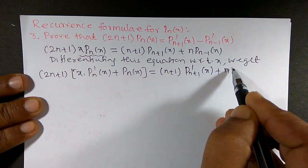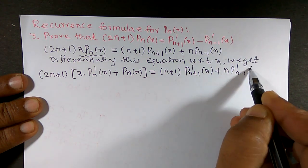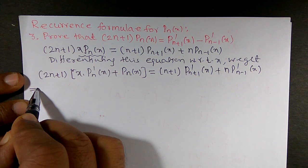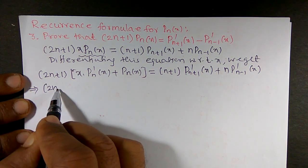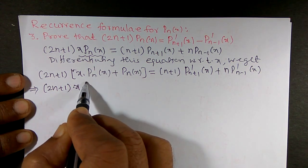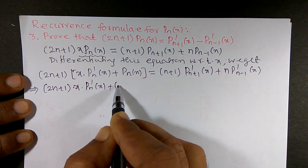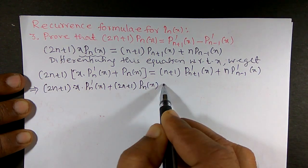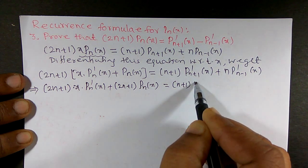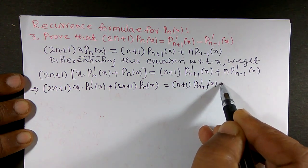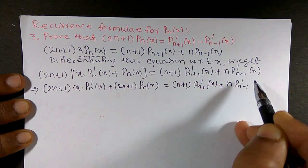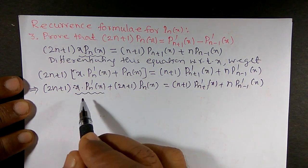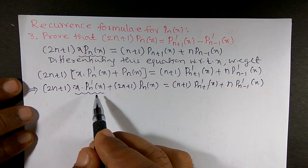On the right side, (n+1) is constant so we get (n+1) · P'ₙ₊₁(x), and n is constant so we get n · P'ₙ₋₁(x). Simplifying the left side gives (2n+1)[x · P'ₙ(x) + Pₙ(x)] = (n+1) · P'ₙ₊₁(x) + n · P'ₙ₋₁(x). Now I want to find the value of x · P'ₙ(x).